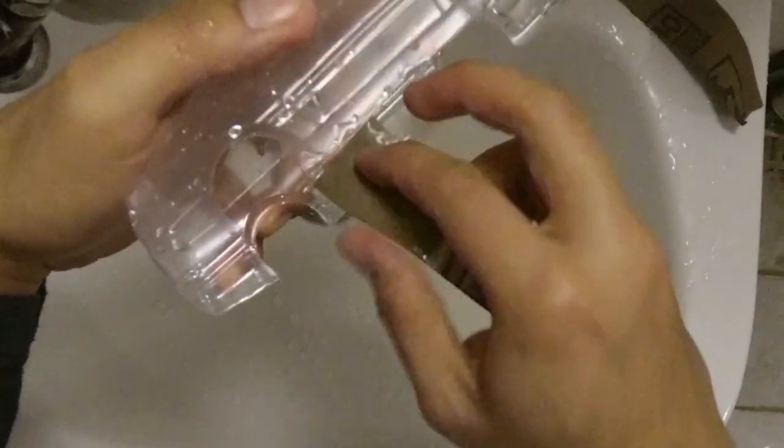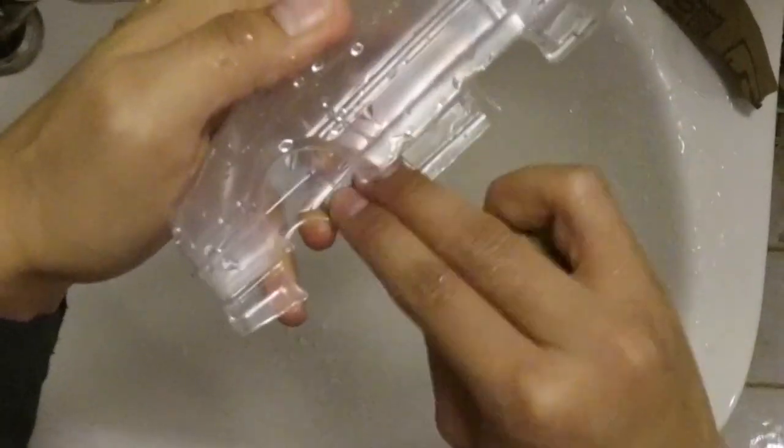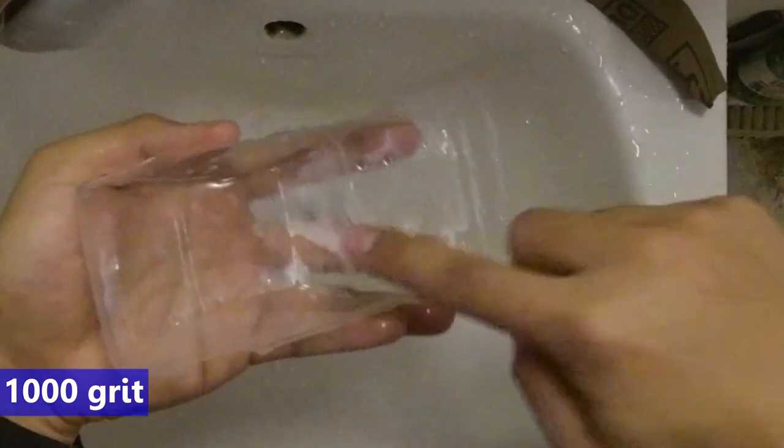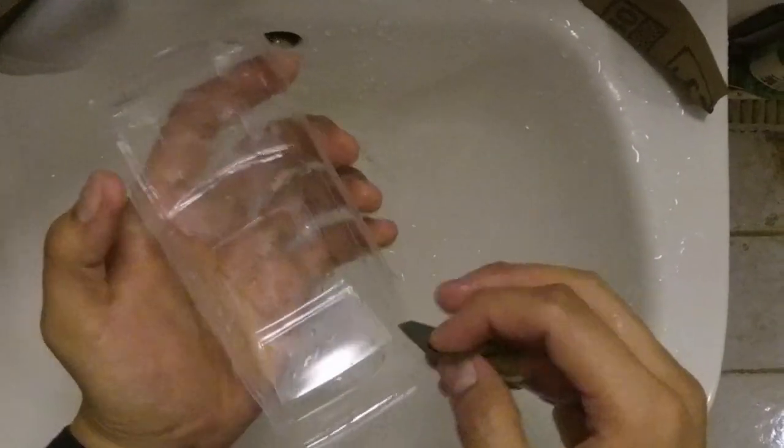On to prepping the body for painting. To make the paint stick, I rub the area I want to paint with 1000 grit sandpaper. Be careful not to sand into the window areas or somewhere that doesn't need the paint.